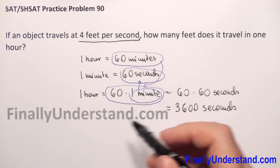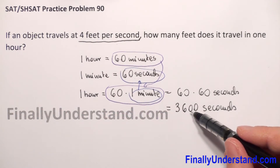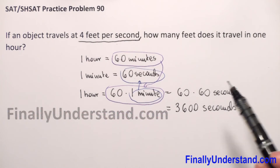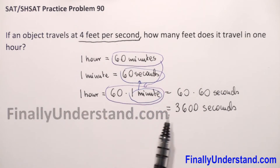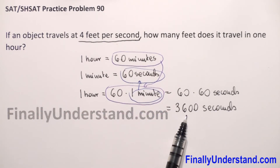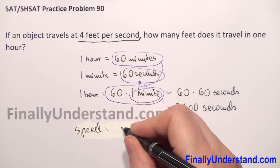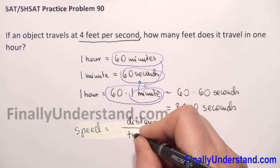So we have established that one hour has 3,600 seconds. The object travels 4 feet per second. We have 3,600 seconds total. We know that the formula is speed equals distance over time.